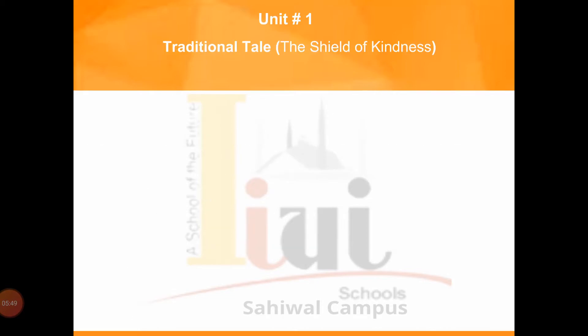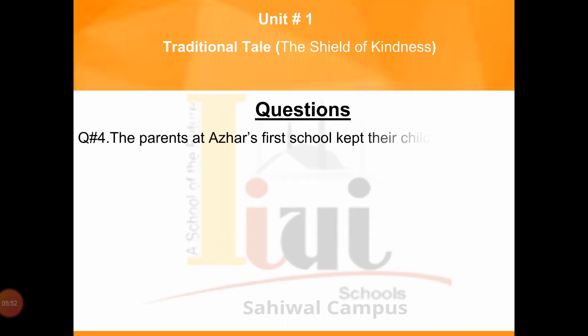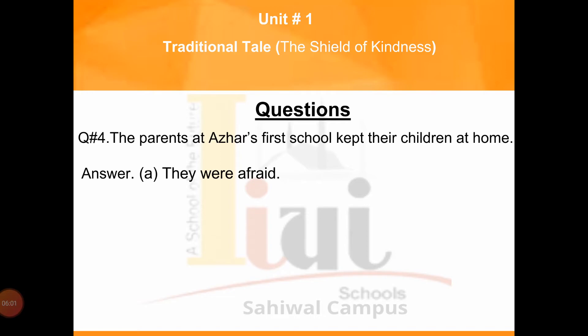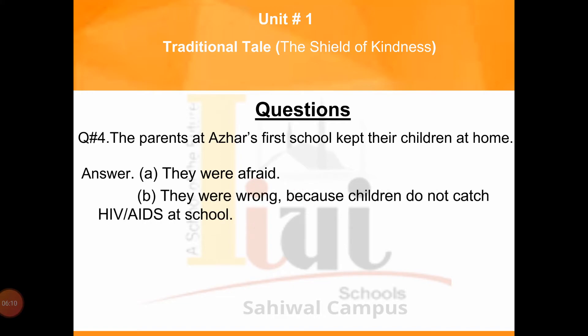Question number four: The parents at Azar's first school kept their children at home. Why did they do so? They were afraid. Question B: Do you think they were right or wrong? They were wrong, because children do not catch AIDS at school.